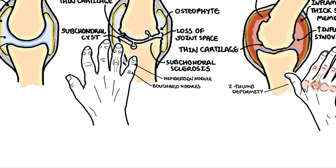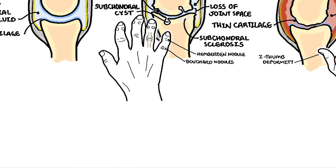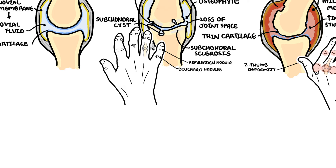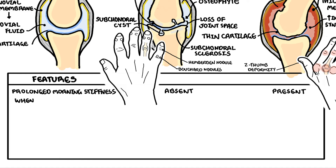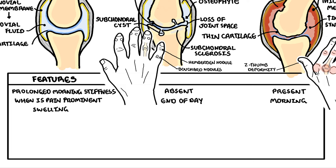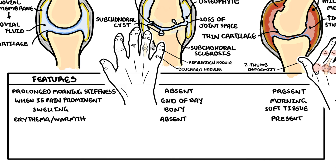Those are some visual features that differentiate osteoarthritis from rheumatoid arthritis. Let us take a look at other differentiating features. Prolonged morning stiffness is typically absent in osteoarthritis and present in rheumatoid arthritis. Pain is more prominent at the end of the day with osteoarthritis and in the morning with rheumatoid arthritis. Swelling of joints is described as bony in osteoarthritis, whereas swelling in inflammatory arthritis causes soft tissue swelling.